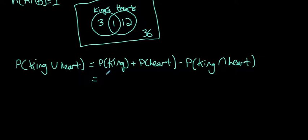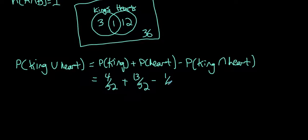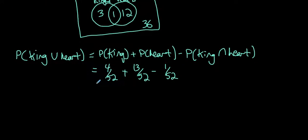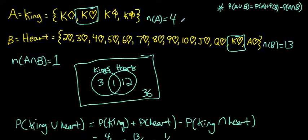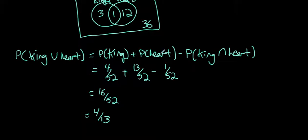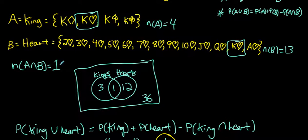P(king) = 4/52, P(heart) = 13/52, minus P(both) = 1/52, because one card — the king of hearts — was double counted. Adding those up: 4/52 + 13/52 − 1/52 = 16/52, which reduces to 4/13. We had to subtract 1/52 because the king of hearts was double counted.